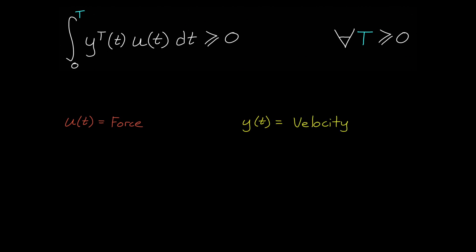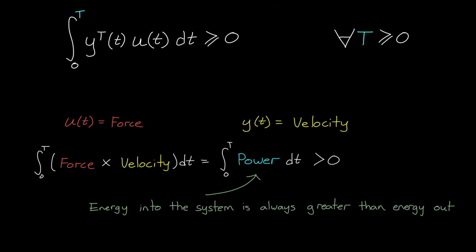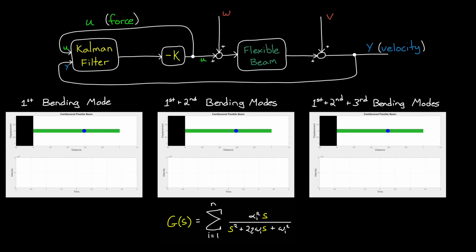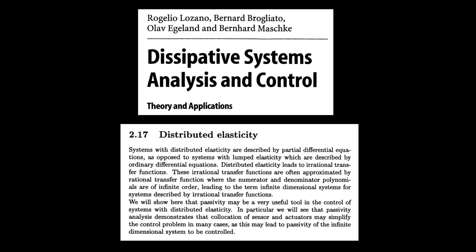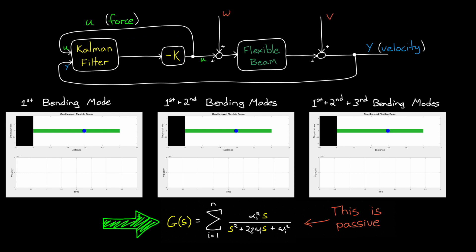For example, if the input into the system is a force and the output is the velocity that the force generates, like our beam problem, then this constraint is basically saying that the integral of force times velocity, or the integral of power, is always positive. Therefore, the energy transferred into the system is always greater than the energy that we get back. No matter what forces we apply, the system only consumes or dissipates energy. If you'd like to walk through a proof that the flexible beam in our problem is actually passive, check out section 2.17 of the book by Lozano and others I've linked to.